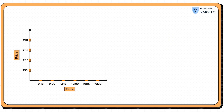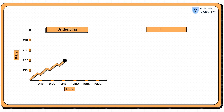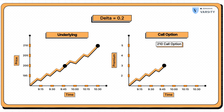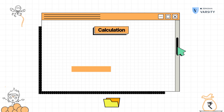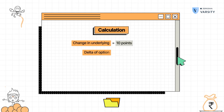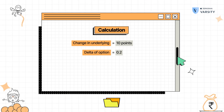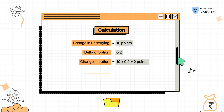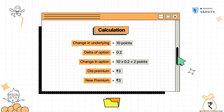Let me ask you this. Assume the underlying price of a stock is 200 rupees. There is a call option associated with this underlying at 210. The premium for this option is 3 rupees. As a trader, you expect this underlying to move by 5%, that is a 10 point change. What do you think is the new premium after the underlying moves by 5%? Assuming the delta of this option is 0.2. Well, delta tells us the rate of change of premium for every one point change in the underlying. The underlying is expected to change by 10 points and the delta is 0.2, so 10 into 0.2 is 2. Therefore, the new premium is the old premium of 3 rupees plus the change in premium of 2 rupees, giving a new premium of 5 rupees.